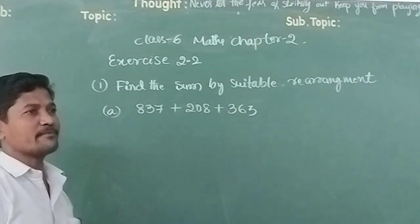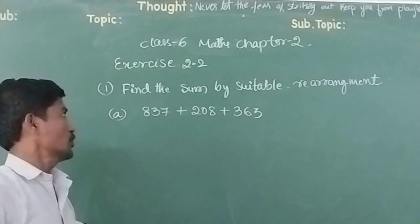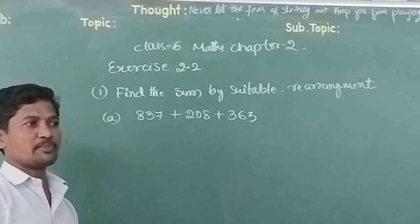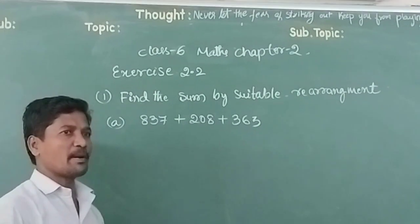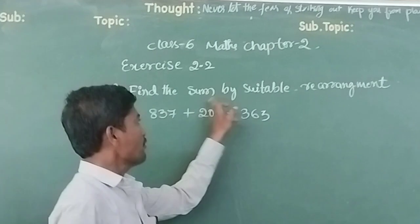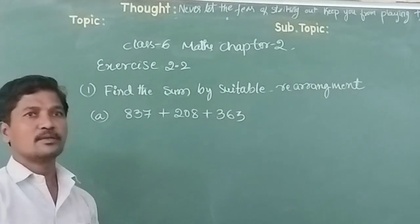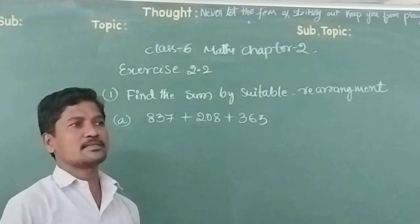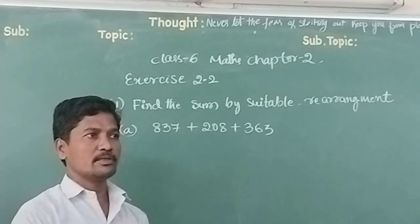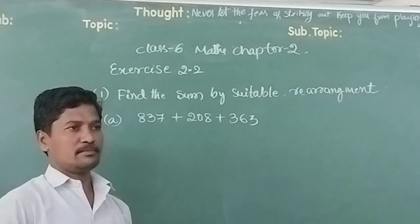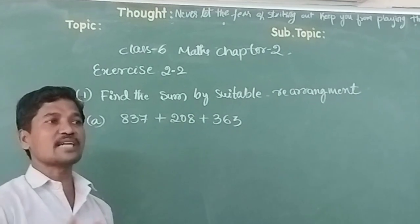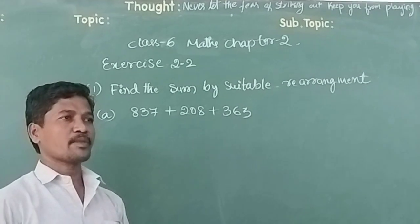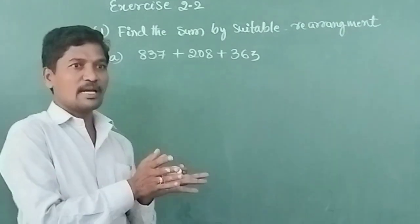6th March, 2nd chapter, we are solving exercise number 2. That is whole numbers. We learned some properties - associative properties, commutative properties. So we have to apply now. What is the title? Find the sum by suitable rearrangement. See here, if I told add 207 plus 56, you need to count. It takes time. If I told you to add 200 plus 57, what is the answer? 257. Why? Because 200 is a round up number already. Complete number.